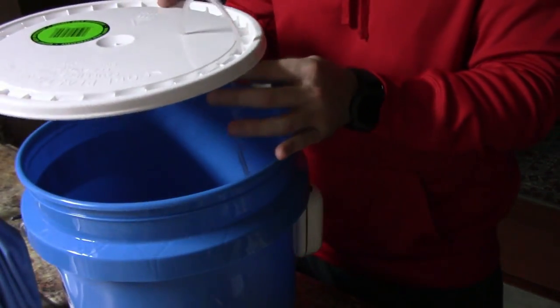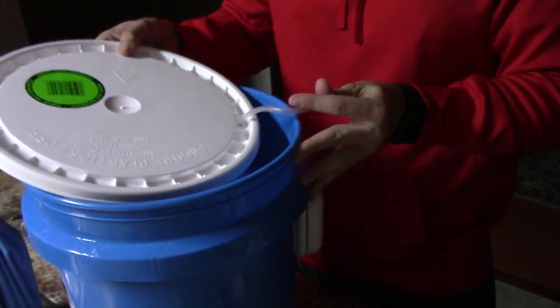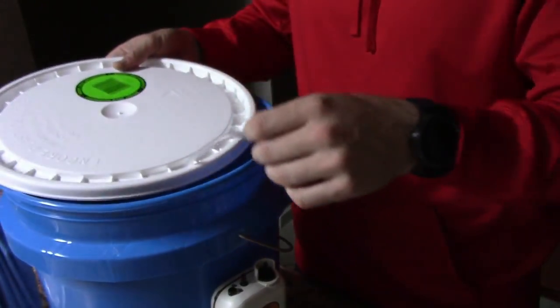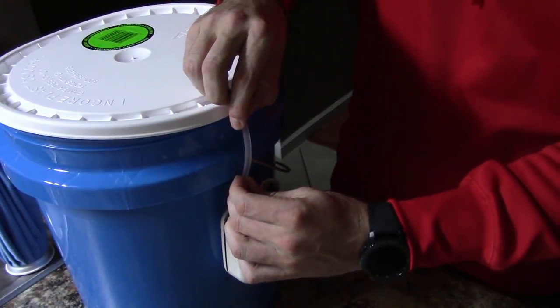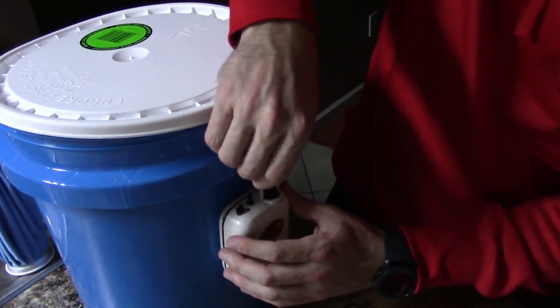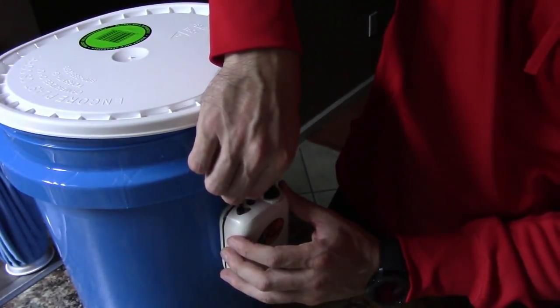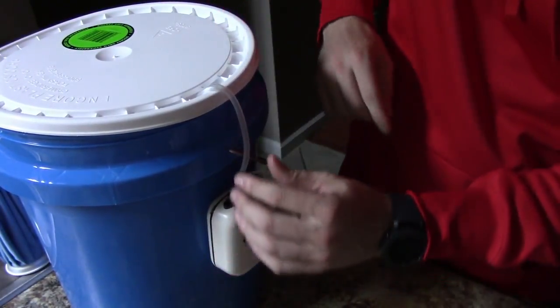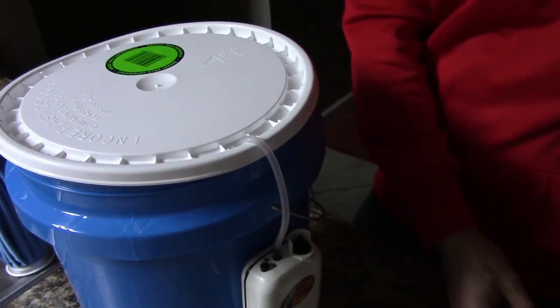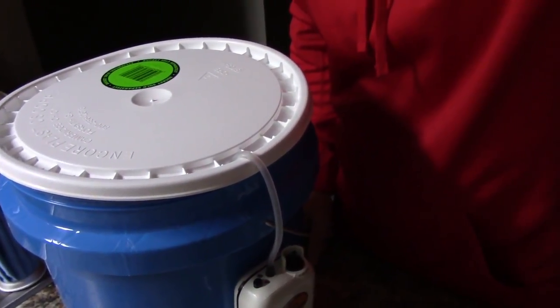Then you're just going to feed your line through the bottom of your lid, out through the top. Attach it to your aerator. And just like that, you saved yourself $50.